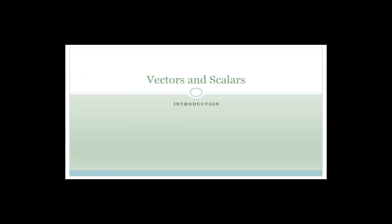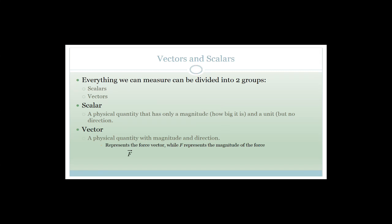For the last few minutes, I'd like to start the next section: vectors and scalars. I know we've just gone from chemistry to physics, but it is the next section. Everything we can measure can be divided into two groups: scalars and vectors. Scalars are physical quantities that have magnitude only. Magnitude means size — how big is it — but there's no direction. For example, if I said I walked two kilometers today, that's a scalar — there's no direction given.